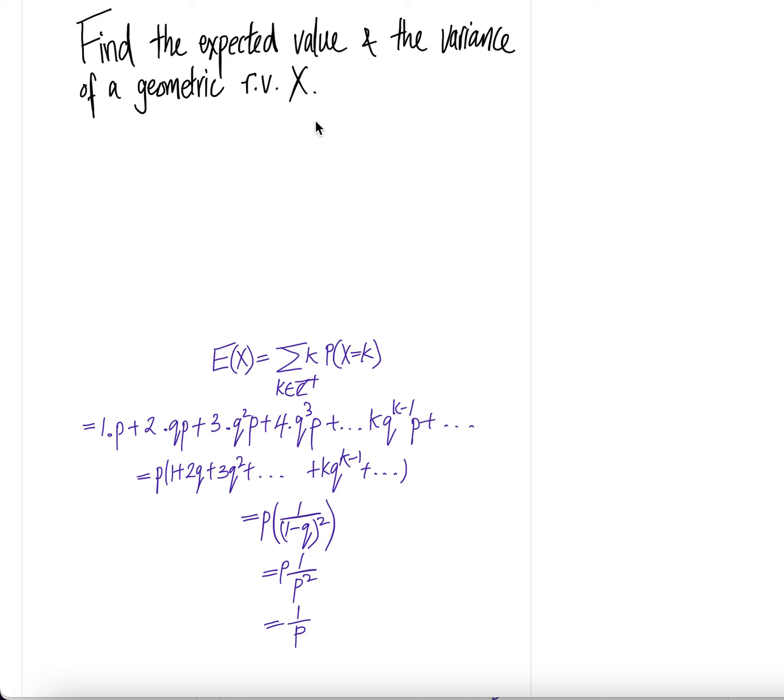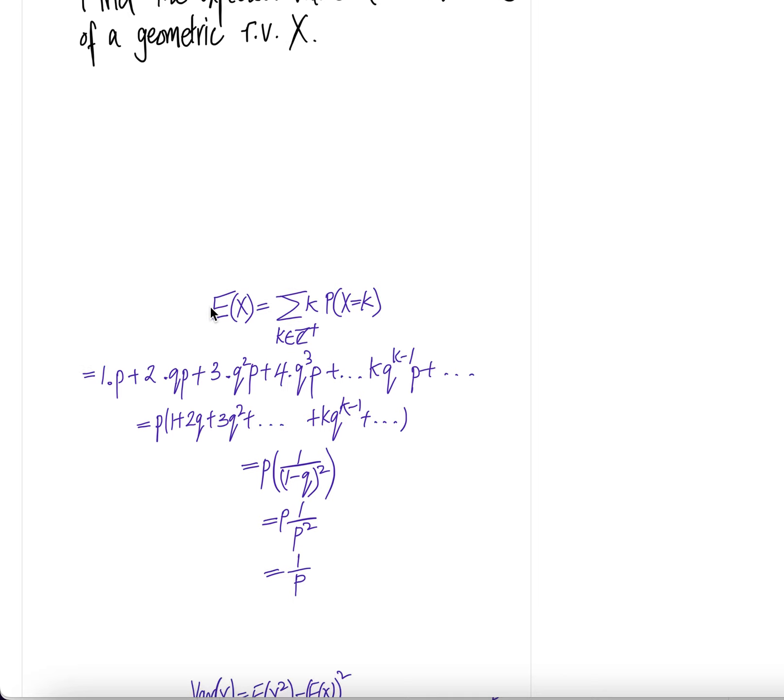Find the expected value and the variance of a geometric random variable X. Definition of expectation of X is summation over k, then probability the random variable X equals k, k equal to the positive integers.